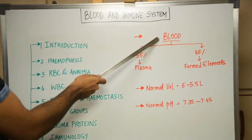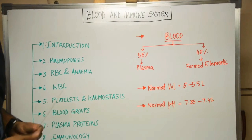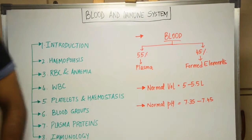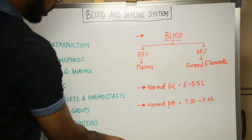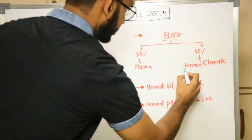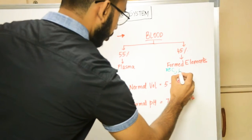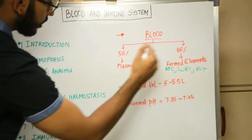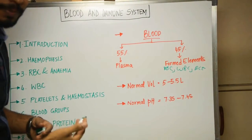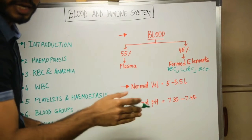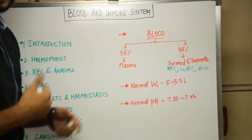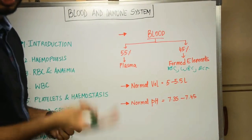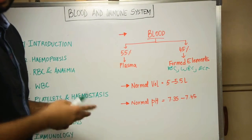Starting with the introduction of blood: blood is a fluid connective tissue. It consists of 55% plasma and 45% formed elements. The formed elements include the blood cells — RBCs, WBCs, and platelets. Plasma is the remaining liquid part of the blood. Plasma consists mainly of water (about 93%), and the remaining constituents include gases (oxygen, carbon dioxide), electrolytes, glucose, and various plasma proteins.